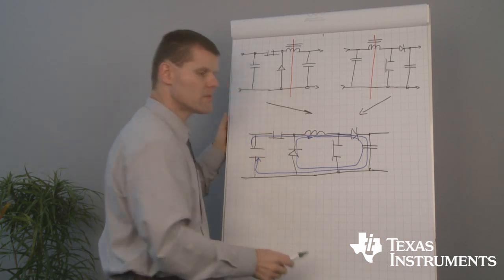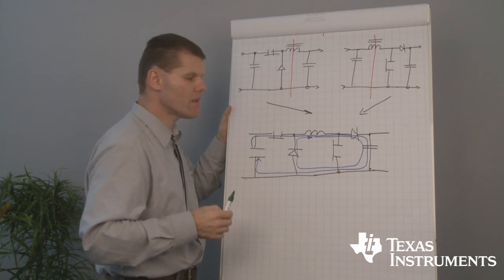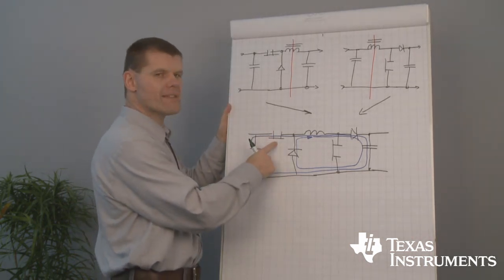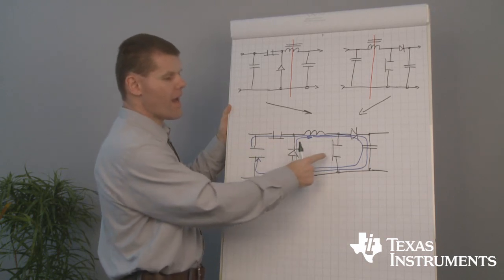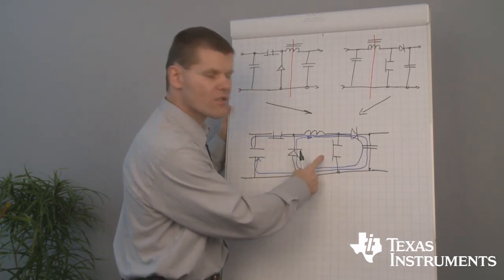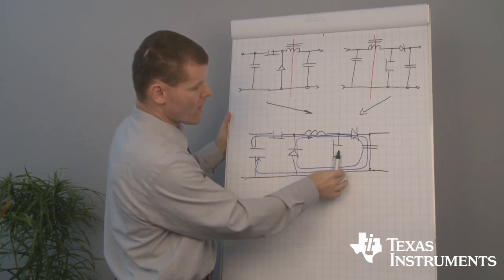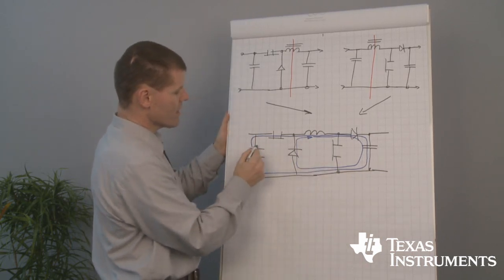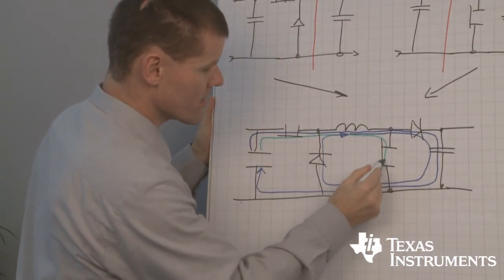And of course we have also the boost mode. At the boost mode the high side FET is always closed and the low side FET starts to switch. Which means when the low side FET closes, a current is forced across the inductor.